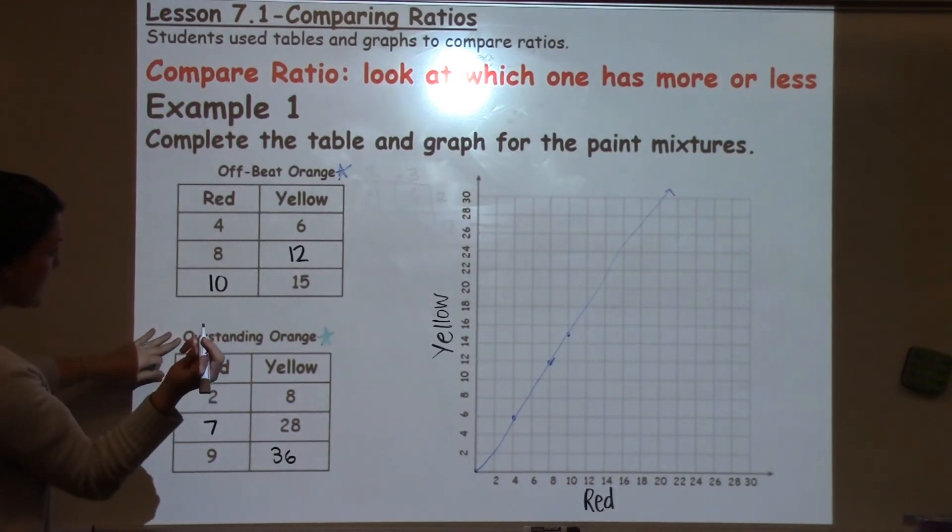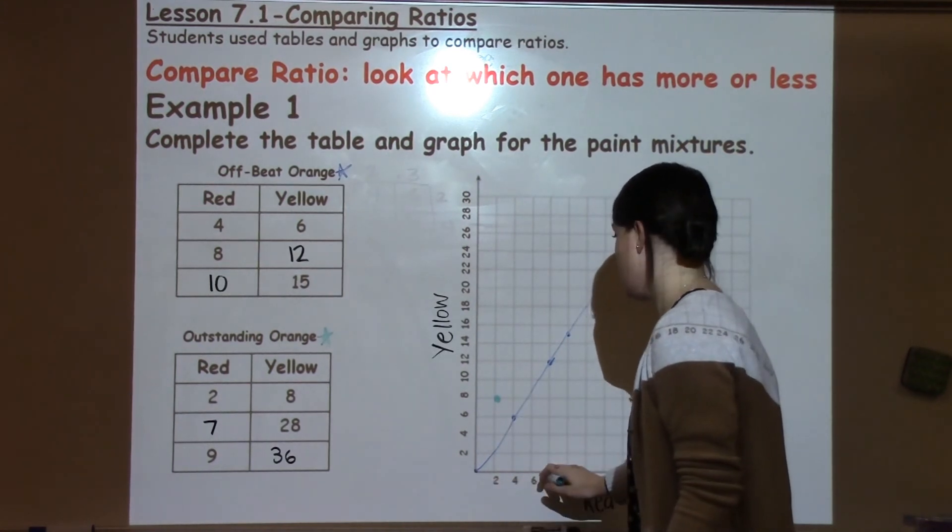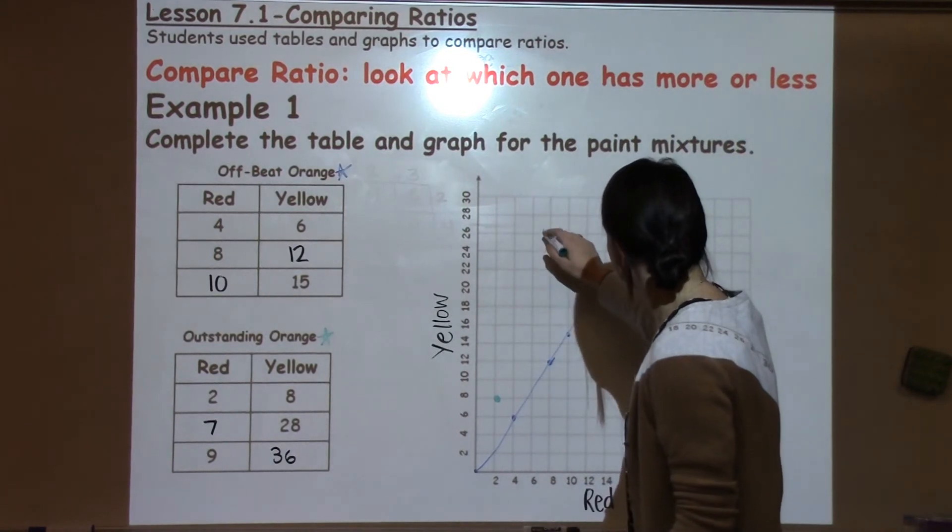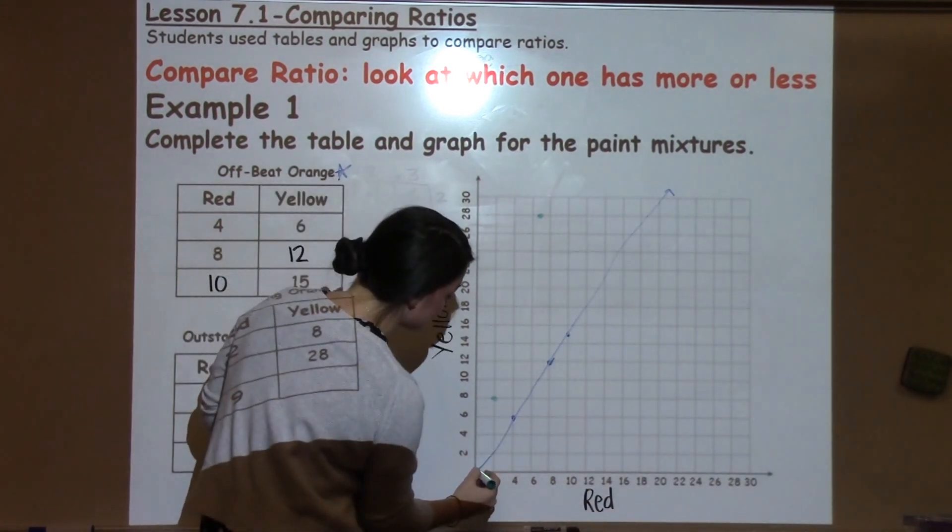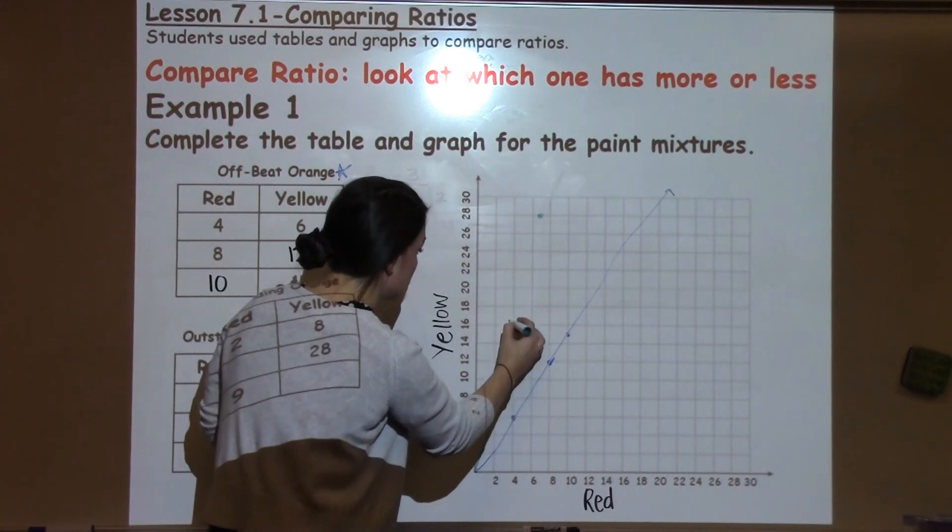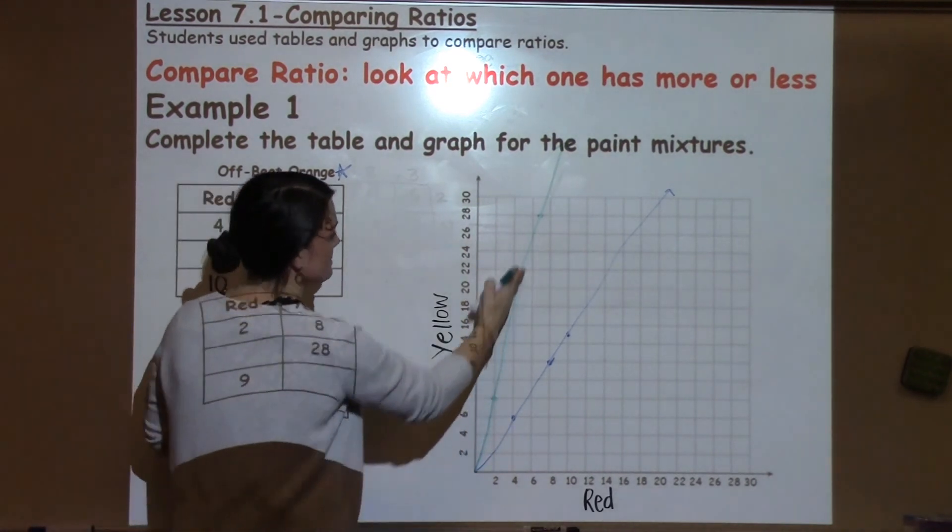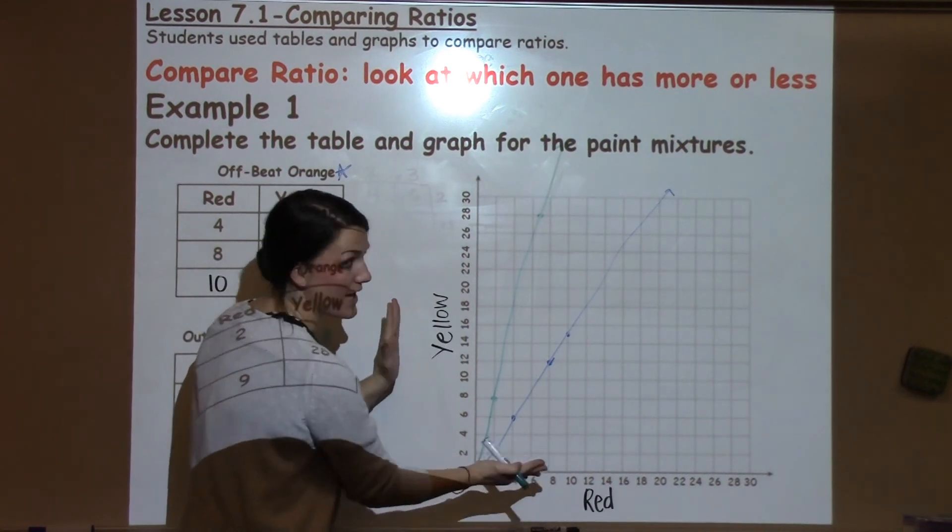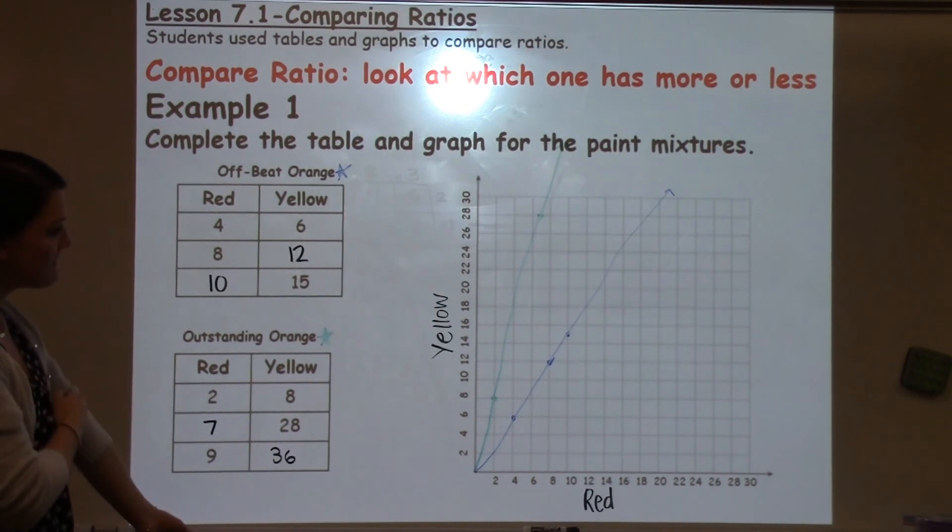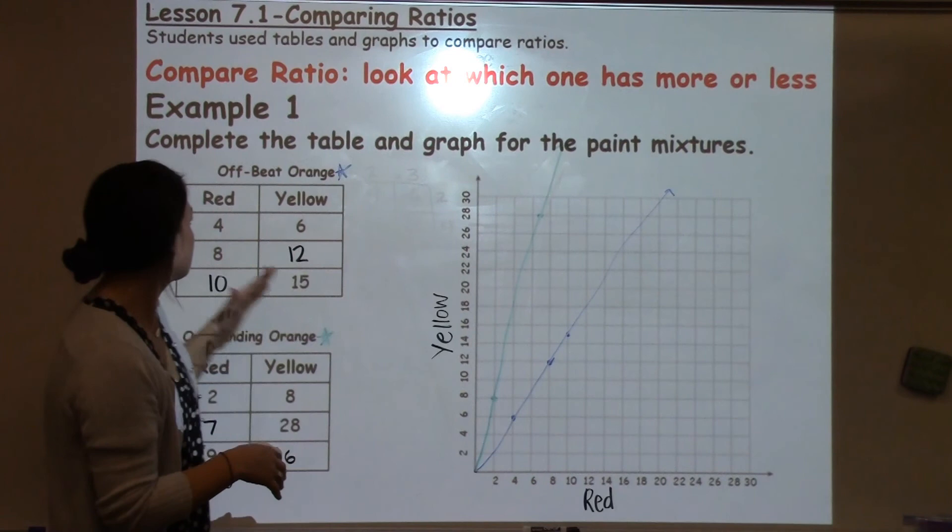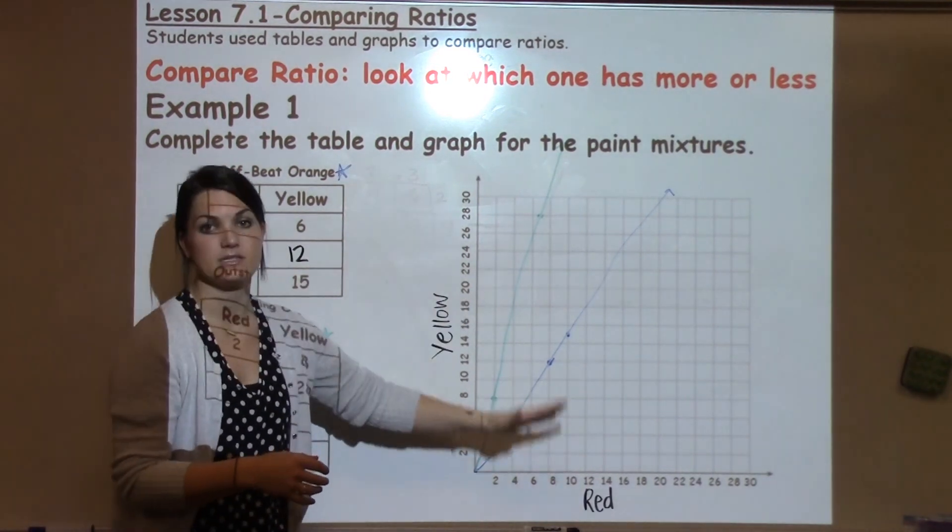Now I'm going to look at outstanding orange, and I'm going to color it in green. And again, I'm just going to graph my points to 8, 7, 28. And then 9, 36 would be off of the graph. So now I'm going to graph my points and create a line as straight as I can. And what this shows me is that outstanding orange, this is the visual of that showing the difference between the yellow and the red, or the ratio of yellow to red. So students can make a couple of different statements based off of this visual looking at the fact that offbeat orange has a larger ratio of red to yellow, then the outstanding orange has more yellow paint than red.